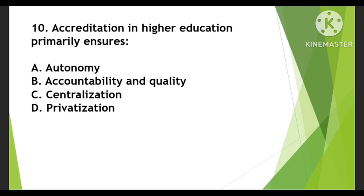Tenth question: Accreditation in higher education primarily ensures — options are autonomy, accountability and quality, or centralization and privatization. Accreditation, which is done by NAAC and involves assessment and quality assurance, primarily ensures accountability and quality. So the right answer is B — accountability and quality.